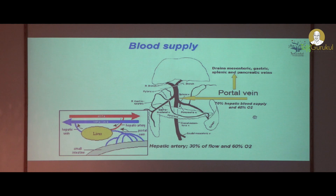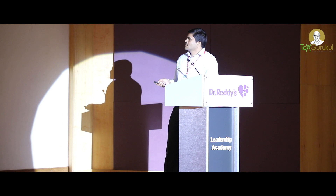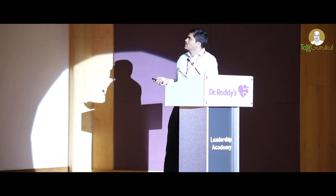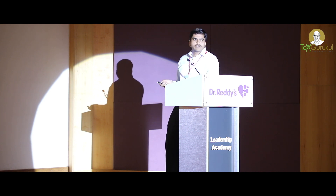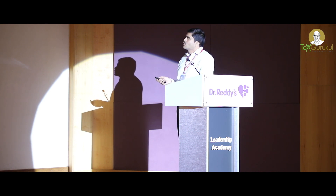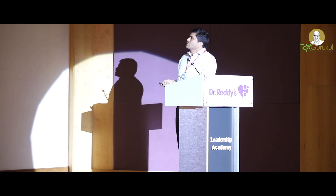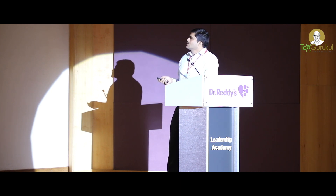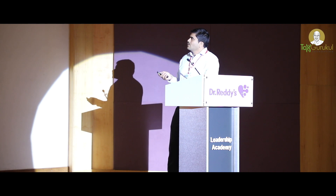To describe this further, the hepatic artery gives only 30 percent of the blood flow to the liver but provides 60 percent of the oxygen, whereas the portal vein provides 70 percent of the blood supply and 40 percent of the oxygen, which is partially deoxygenated. So we have a dual blood supply for the liver.